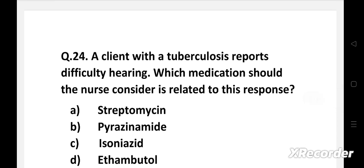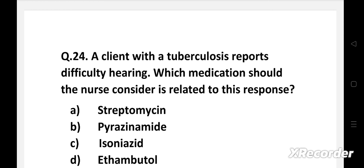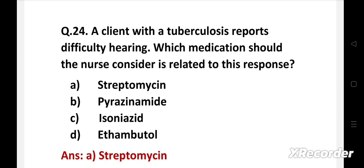Next question. A client with tuberculosis reports difficulty hearing. Which medication should the nurse consider is related to this response? Option A: streptomycin, B: pyrazinamide, C: isoniazid, D: ethambutol. Right answer is option A, streptomycin. Ototoxicity is an adverse effect of aminoglycosides such as streptomycin.